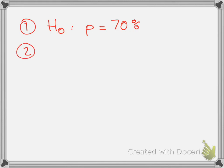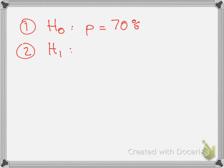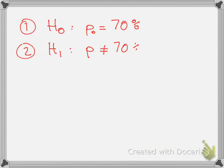We want to test this proportion against the alternative hypothesis. The question asks whether the population proportion p of male arrests in Wyoming is different from 70%, so the alternative hypothesis H1 is that p ≠ 0.70.